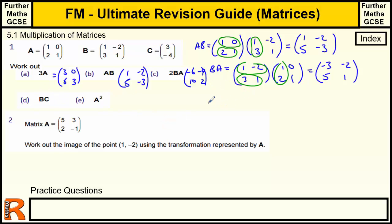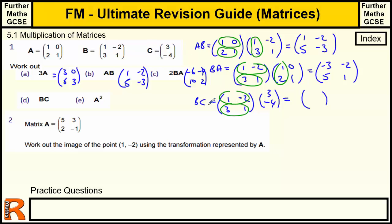Now BC: B is the 2 by 2 matrix and C is a 2 by 1 matrix. When you multiply a 2 by 2 by a 2 by 1, you get a 2 by 1 result. Top element: 1 times 3 plus -2 times -4 equals 3 plus 8, which is 11. Bottom element: 3 times 3 plus 1 times -4 equals 9 minus 4, which is 5. So BC = (11; 5). These two inner dimensions must match, and the result takes the outer dimensions.